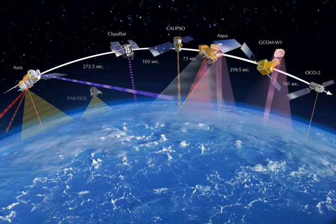An Earth observation satellite or Earth remote sensing satellite is a satellite specifically designed for Earth observation from orbit, similar to spy satellites but intended for non-military uses such as environmental monitoring, meteorology, map-making, etc.